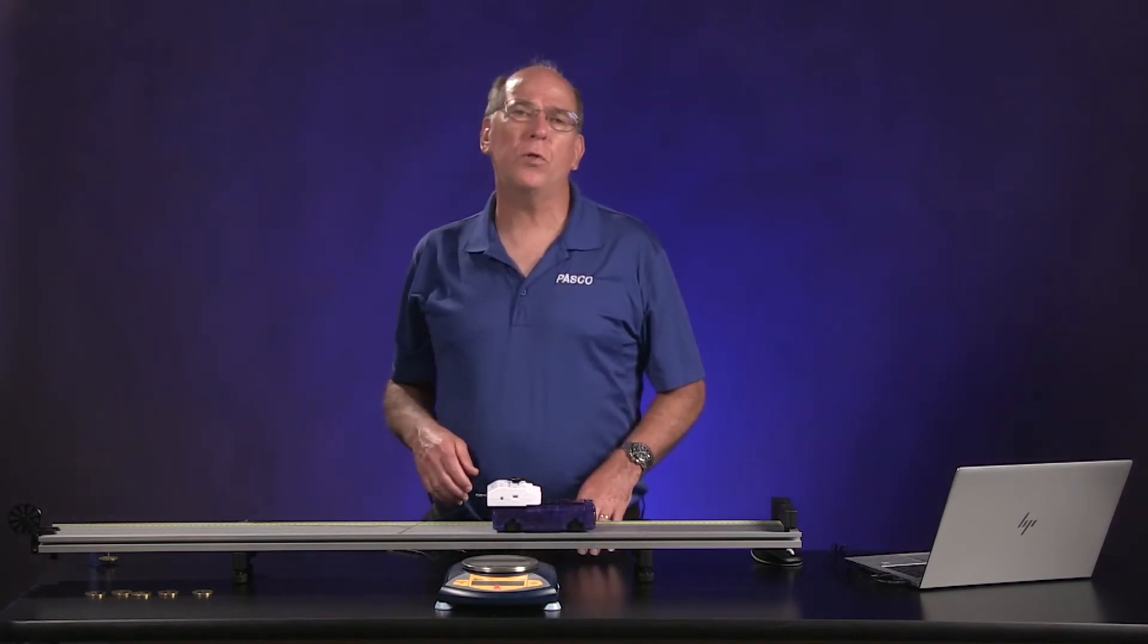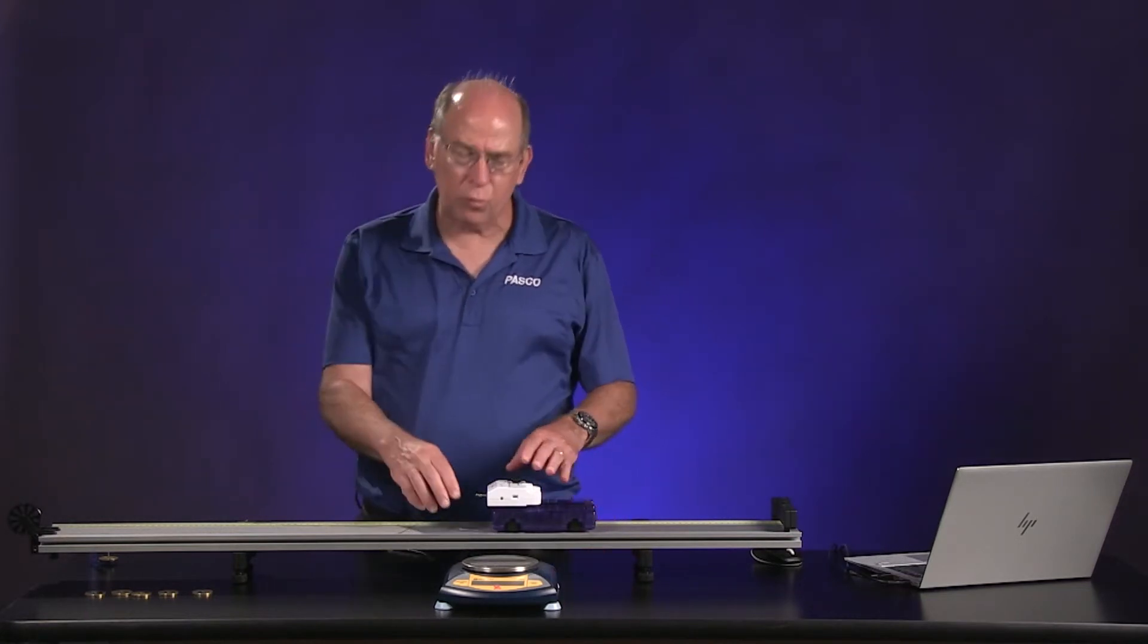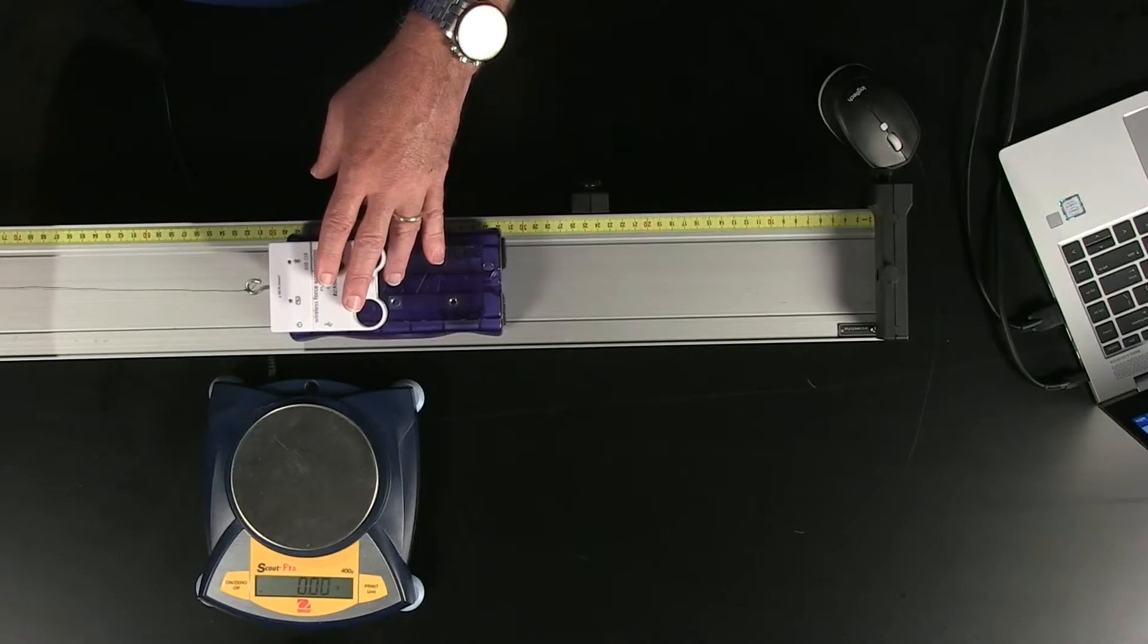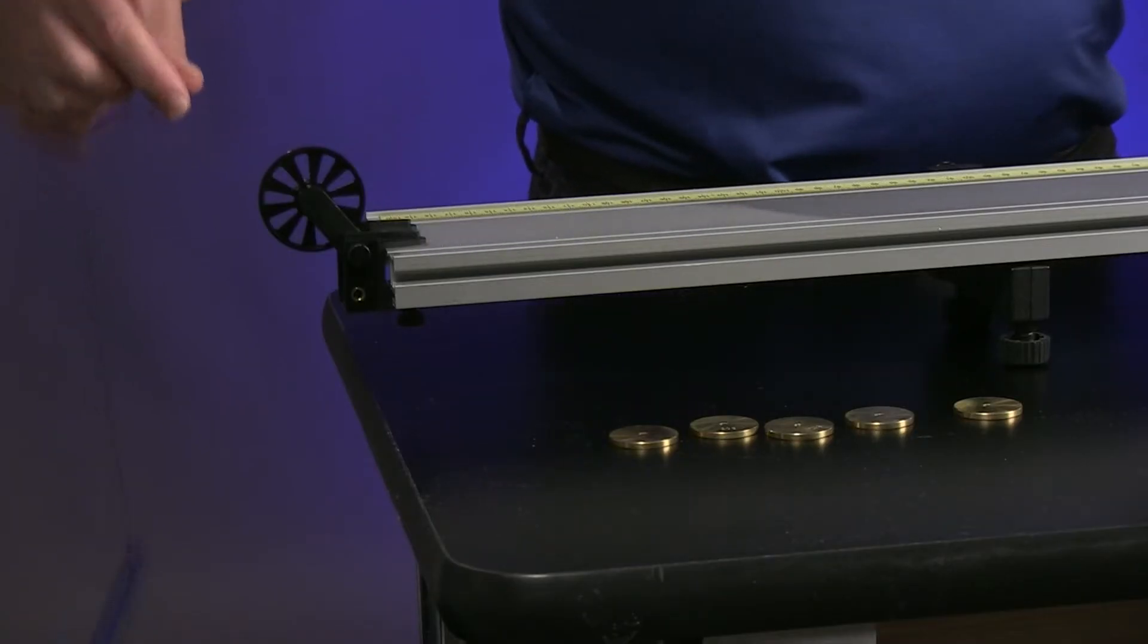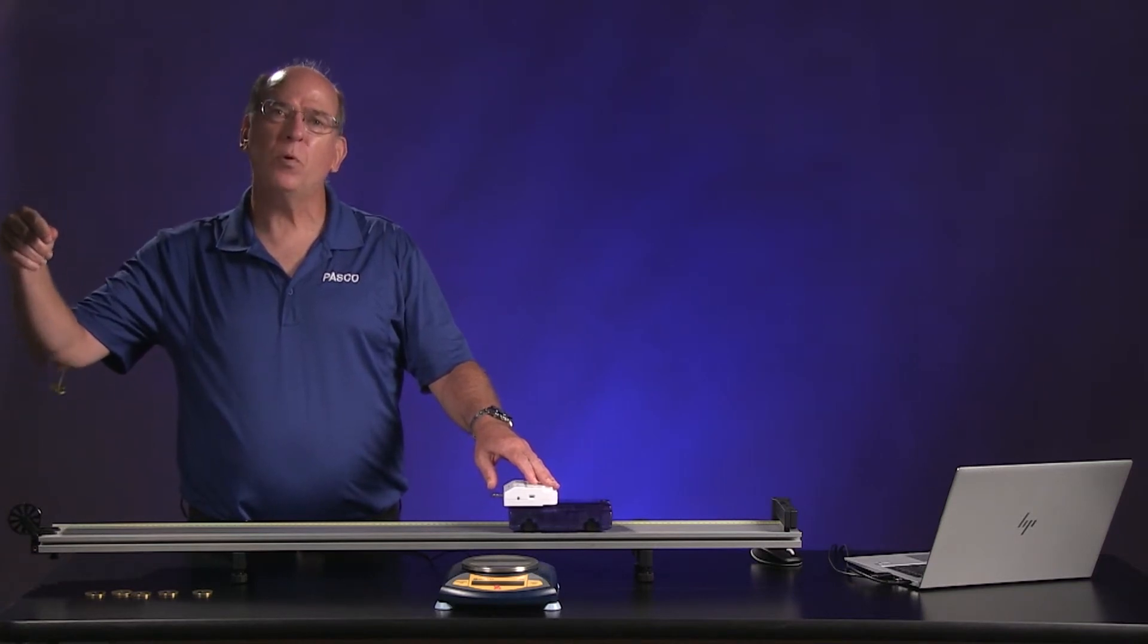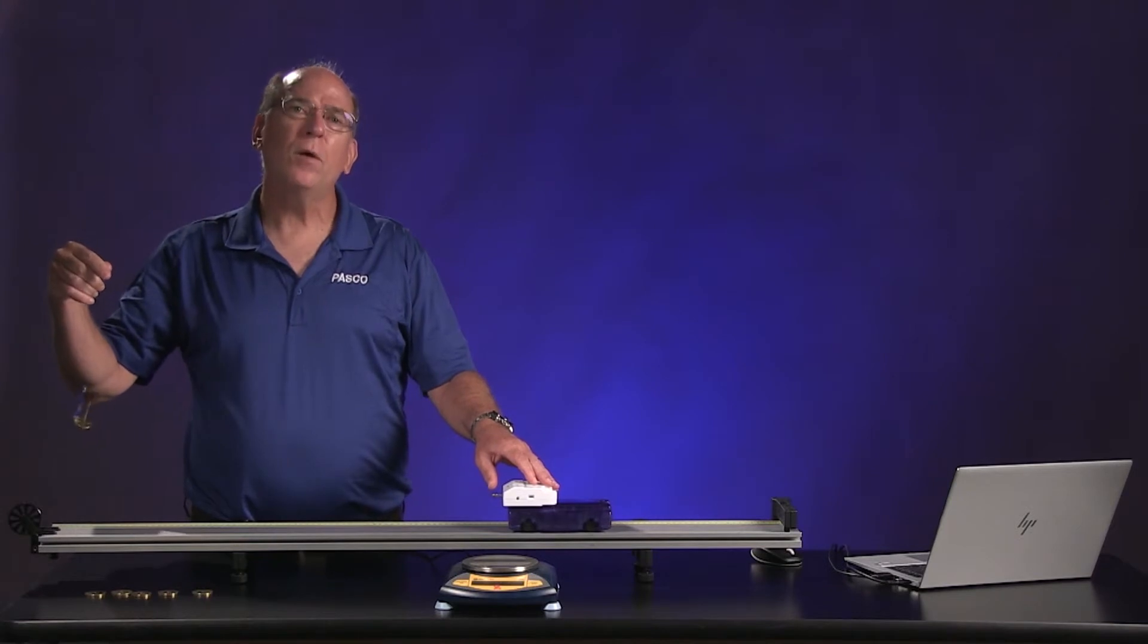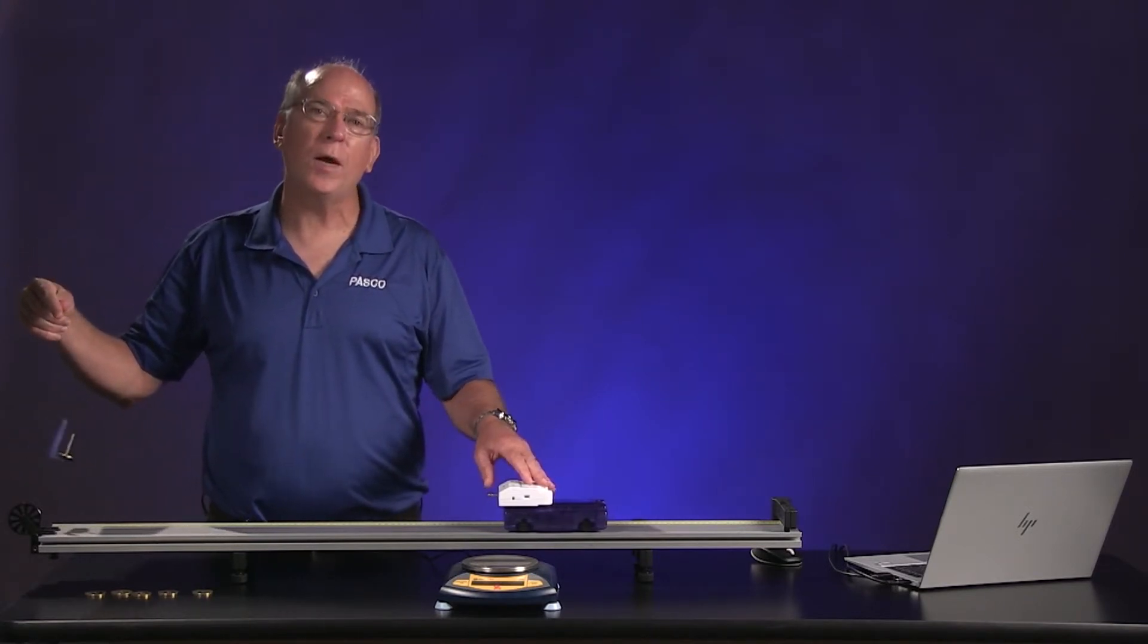We want to make sure the applied force is constant for each trial. To accomplish this, we've attached a string to the hook on the force sensor and passed it over a pulley on the end of the track. We have a weight on the other end of the string that will produce a tension in the string. After we release the cart, this tension will remain constant and cause the cart to accelerate down the track.